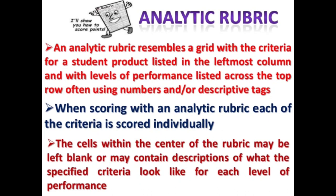On the other hand, an analytic rubric resembles a grid with the criteria for a student product listed in the leftmost column and levels of performance listed across the top row, often using numbers and/or descriptive tags. When scoring with an analytic rubric, each of the criteria is scored individually. The cells within the center may be left blank or may contain descriptions of what the specified criteria look like for each level of performance.